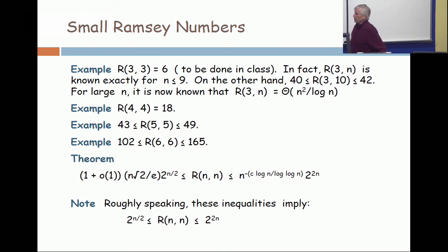Now, look at the big terms in these expressions. The big terms are the exponential terms involving 2. The lower bound is of the form, roughly speaking, the big term in it is 2 to the n/2. And the big term in the upper bound is 2 to the 2n.